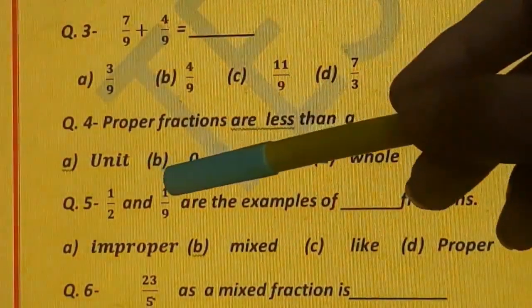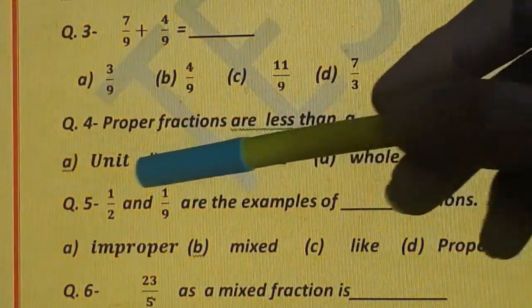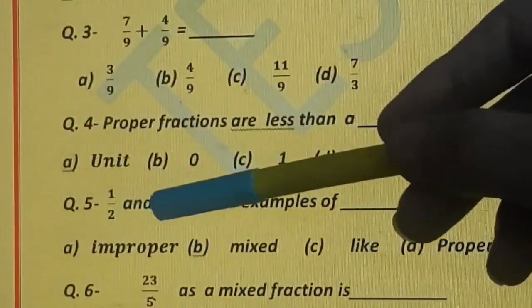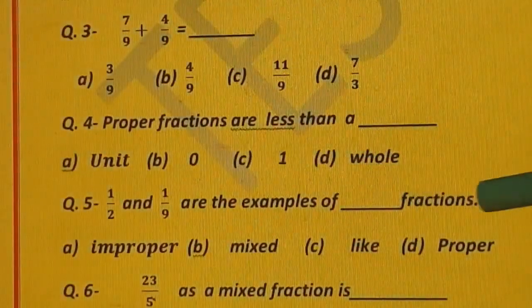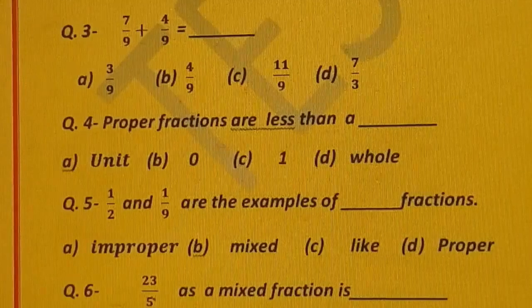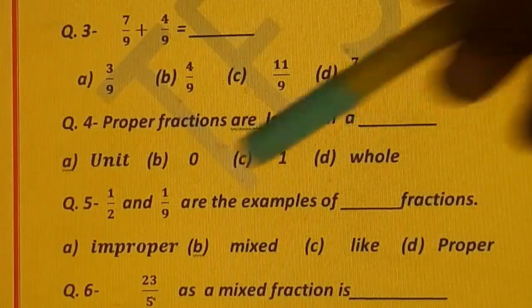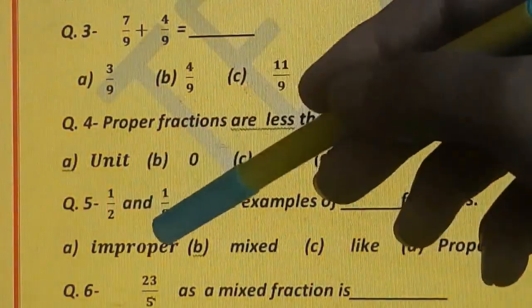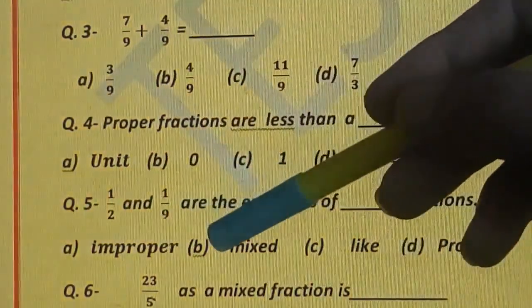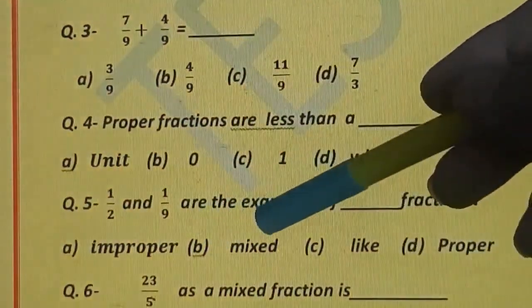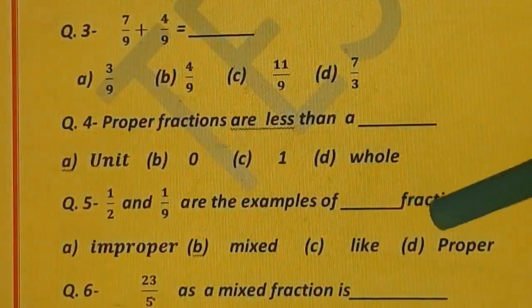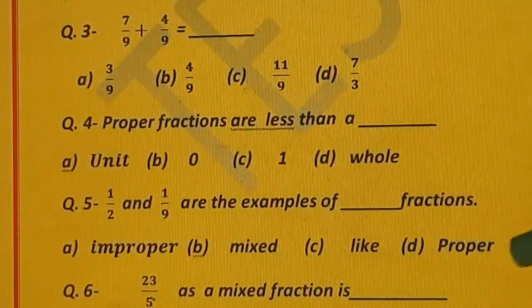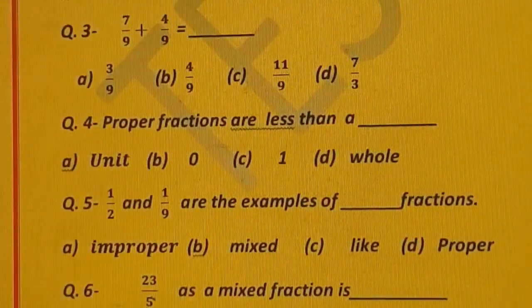Question number 5. 1 upon 2 and 1 upon 9 are the examples of dash fractions. Options are: A) improper, B) mixed, C) like, and D) proper.